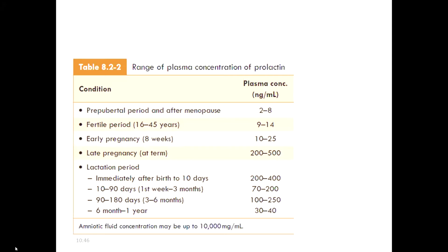In early pregnancy, prolactin secretion gradually increases. It reaches a maximum at late pregnancy — at term — and remains elevated up to eight to ten weeks postpartum, after which it gradually decreases.